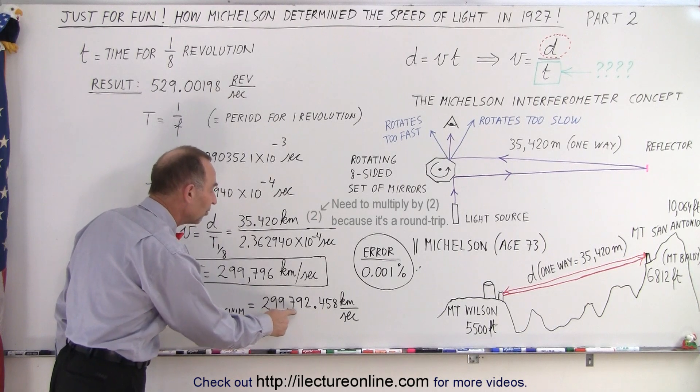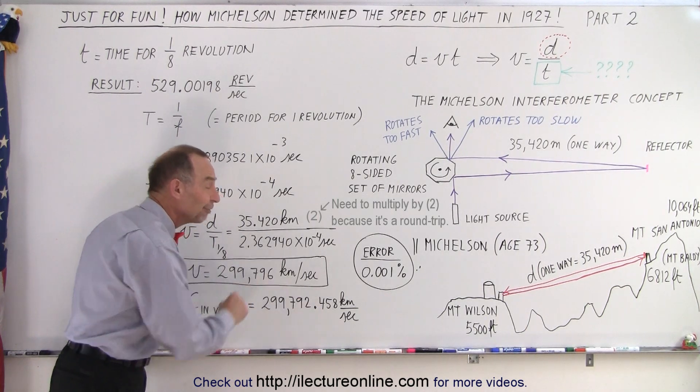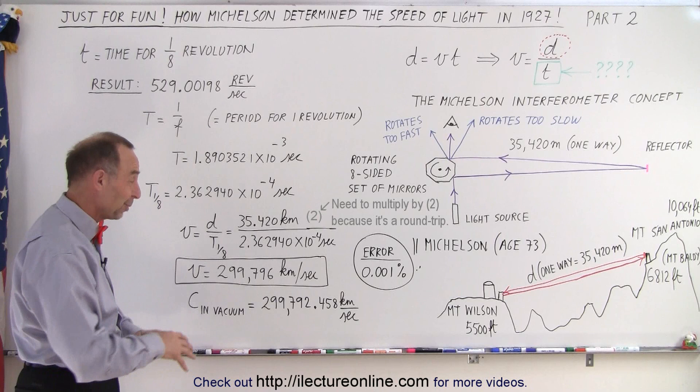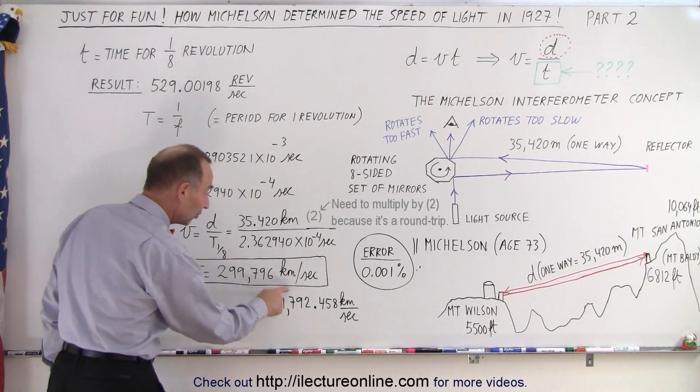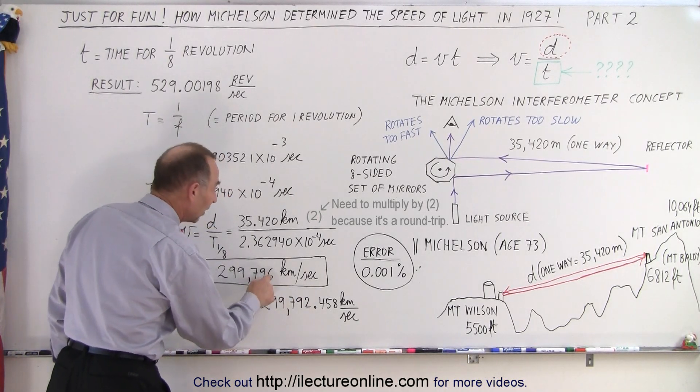Now of course with our modern technology, we've determined that it's actually 299,792.458 kilometers per second if you want to really be accurate. But notice the last digit, instead of a six, it's actually a two or a little bit more than two.